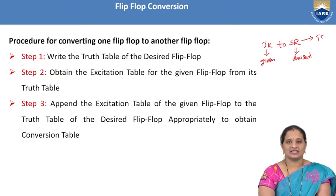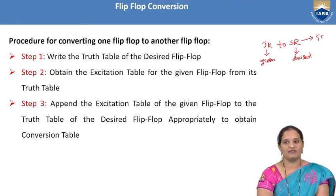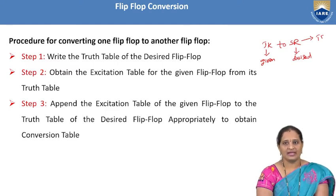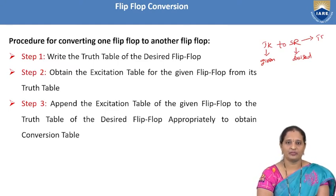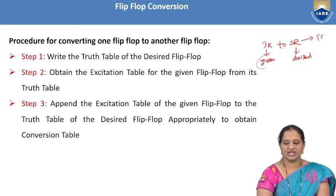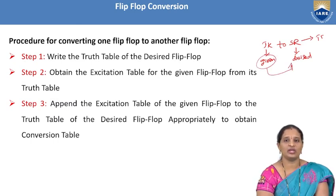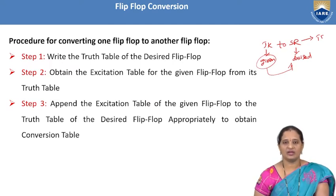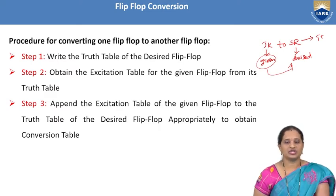The third step is to append the excitation table of the given flip-flop to the truth table of the desired flip-flop appropriately to obtain the conversion table. That means in step 3 we obtain the conversion table by appending the excitation table of the given flip-flop to the truth table of the desired flip-flop.